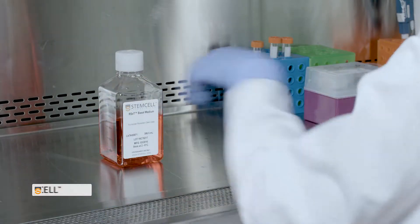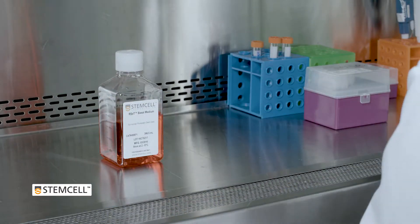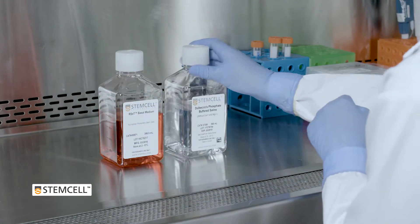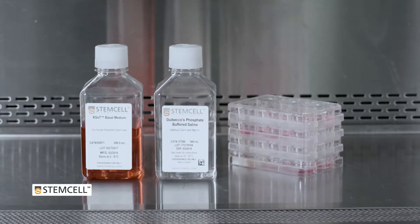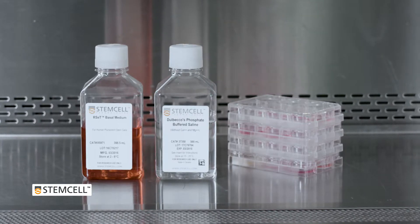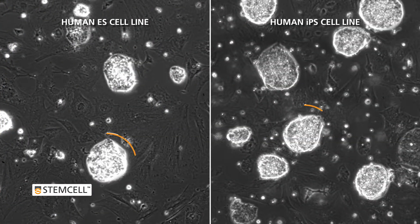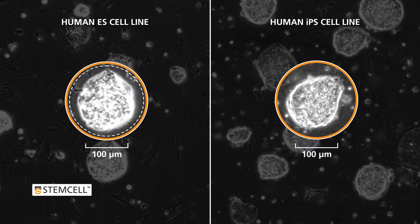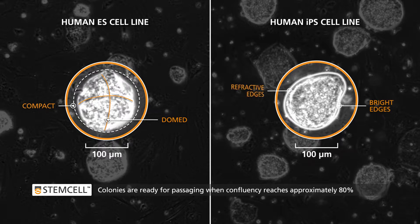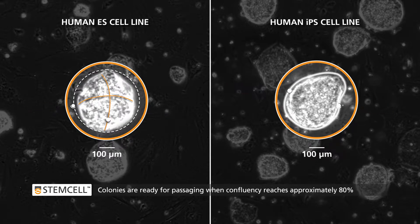Let us guide you through the protocol for passaging human naive-like PSCs derived and maintained in Reset. Naive-like PSC colonies exhibit a compact and domed morphology with bright, refractive edges. When confluency reaches about 80%, the colonies are ready to be passaged.